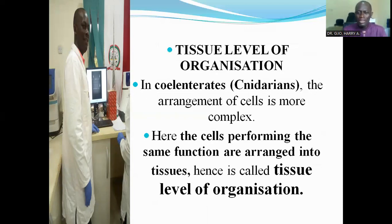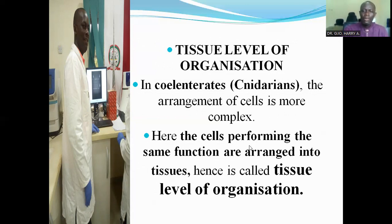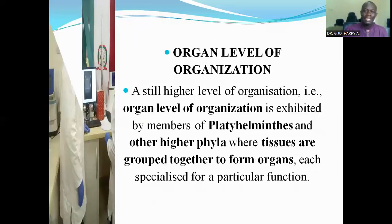The next level of organization is the tissue level of organization. This is more complex. Here, the cells performing the same function are arranged into tissues — hence it's called tissue level of organization. The cells that are performing the same function are grouped together into tissues, and such organisms are said to exist in the tissue level of organization.